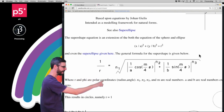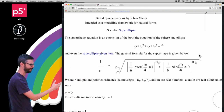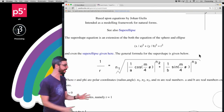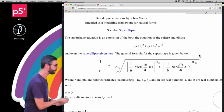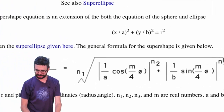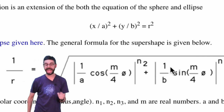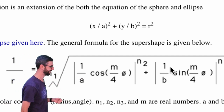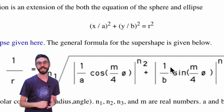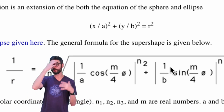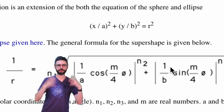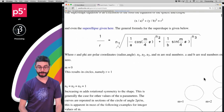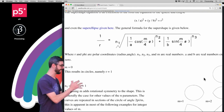The formula says 1/r equals all of this stuff, with phi being the angle. I can flip it so r equals 1 over that expression. Looking deeper, there are six constants: A, B, M, N1, N2, and N3. Based on those values you get a variety of different results. Looking at Paul Bork's page, you can see with different values of M you get very different shapes, and hopefully doing this correctly we'll reproduce those results.